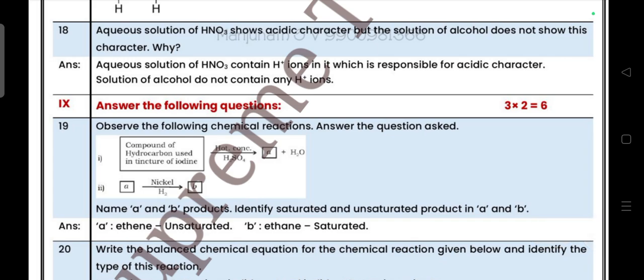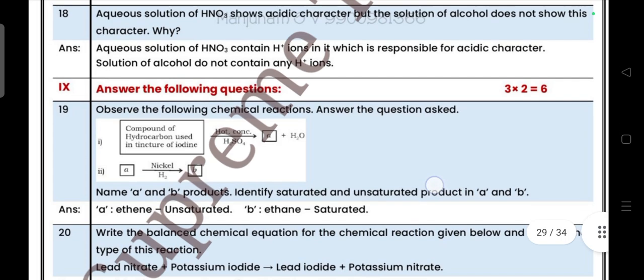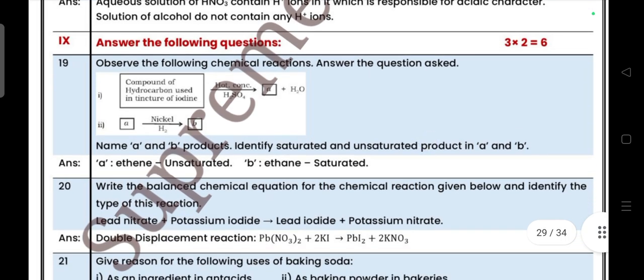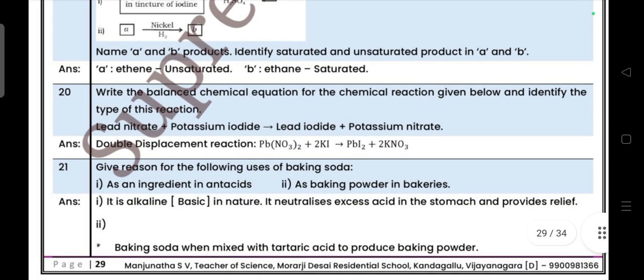Answer the following question. Two mark question: Observe the following chemical reaction and answer the questions. Name the A and B products. Identify the saturated and unsaturated product in A and B. Question number 20: Write the balanced chemical equation for the chemical reaction given below and identify the type of reaction.